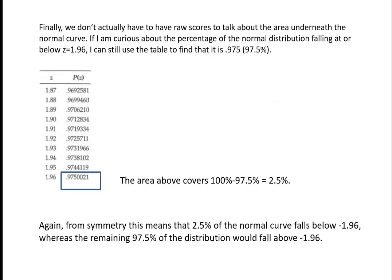It is worth mentioning that we don't have to use raw scores to talk about the area underneath the normal curve. If we're curious about the percentage of the normal distribution falling at or below a z-value of positive 1.96, we can use the table to find it is 0.975 — basically 97.5% of the distribution falls at or below positive 1.96. By symmetry, 97.5% falls at or above negative 1.96. Since 97.5% falls below positive 1.96, that means 2.5% falls above it, and the same 2.5% is mirrored in the lower tail at or below negative 1.96.